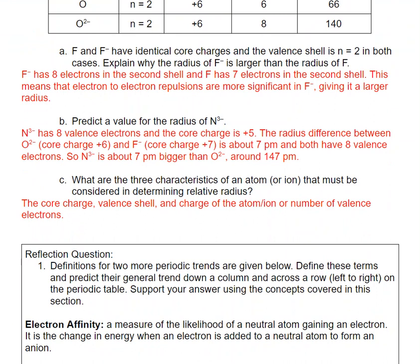What three characteristics of an atom or ion do we need to know to determine its relative radius? We need to know the core charge, the valence shell (how many valence shells there are), and something that tells us about how many electrons there are — either the charge of the atom or ion, or the number of valence electrons.